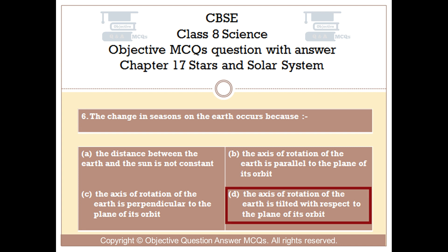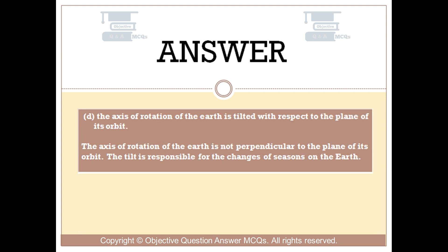The right answer is Option D — the axis of rotation of the Earth is tilted with respect to the plane of its orbit. The axis of rotation of the Earth is not perpendicular to the plane of its orbit. The tilt is responsible for the changes of seasons on the Earth.